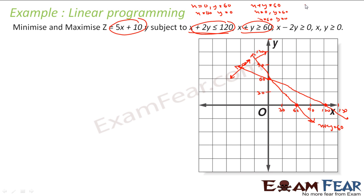Next constraint is x - 2y = 0, which means x = 2y. Put x = 0, you get y = 0. So (0, 0) is one point. Let's take another point: x = 60, y = 30. So (0, 0) and (60, 30) are two points on the line x - 2y = 0. That's the line for our third constraint.